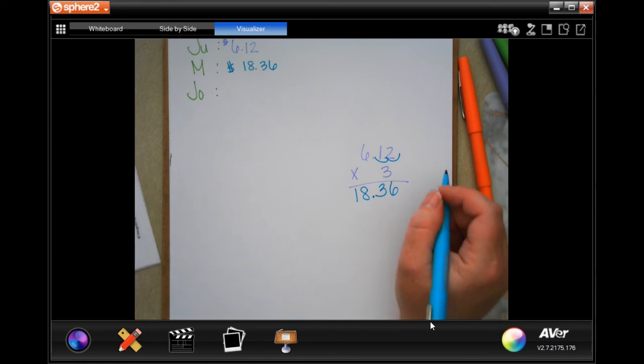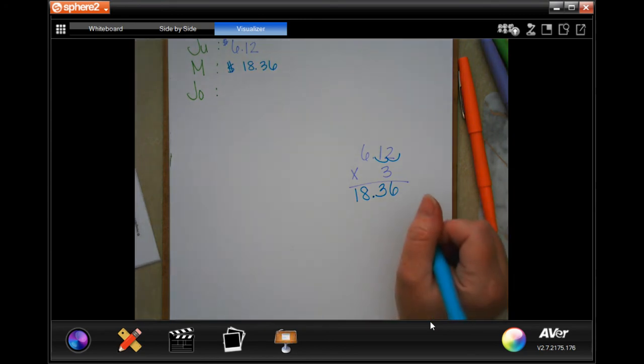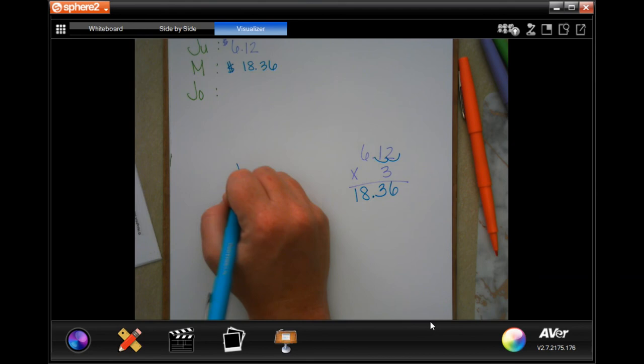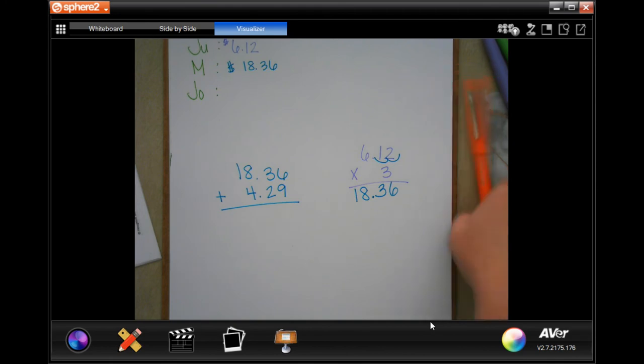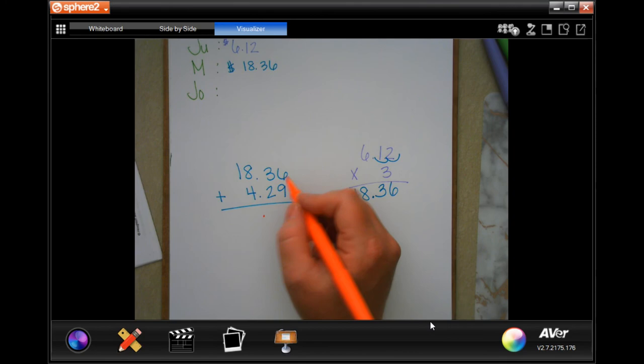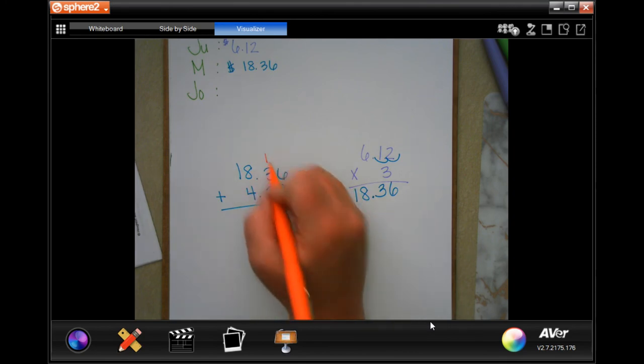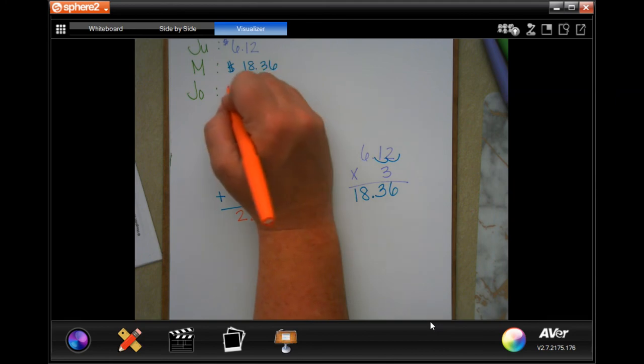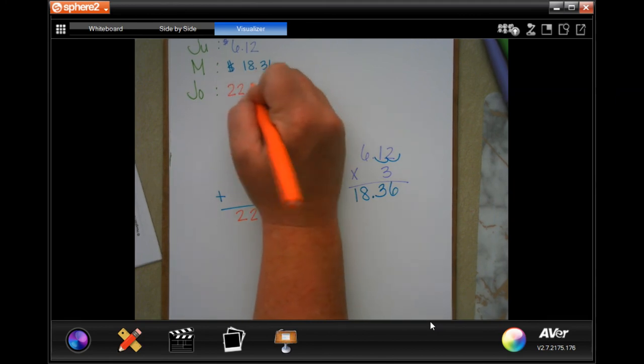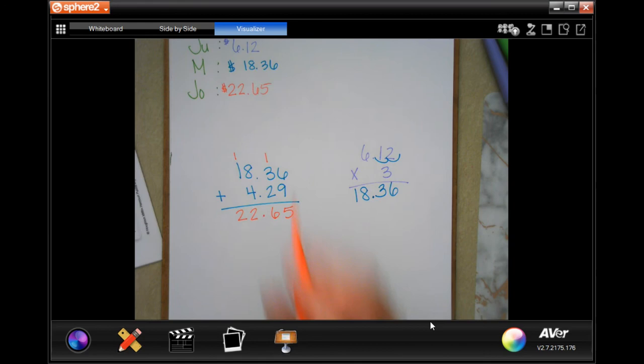Now, Jonah spends what Morgan spends and $4.29 more. So $18.36 plus $4, lining up our decimals, and $0.29. Now, dropping our decimal because we're adding. Six plus nine is 15. Carry that one. One plus three is four. Plus two is six. Eight plus four is 12. Carry the one. And one plus one is two. So Jonah spends $22.65.